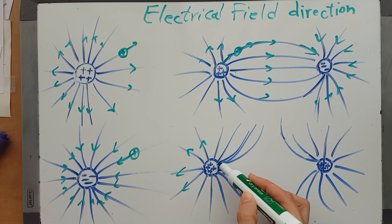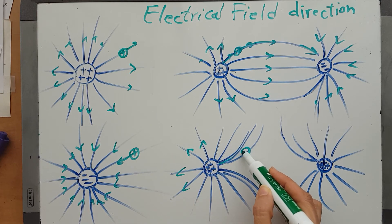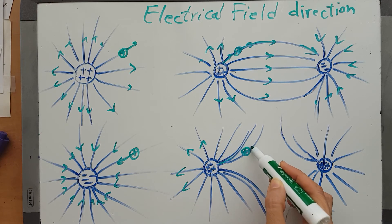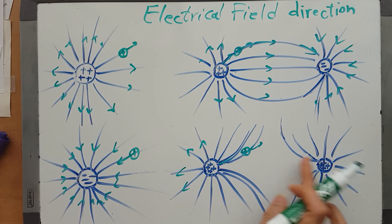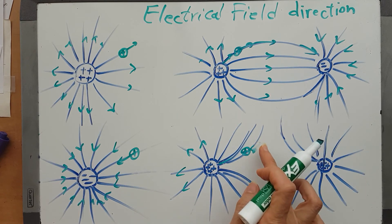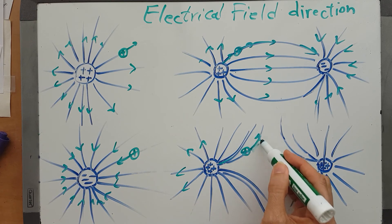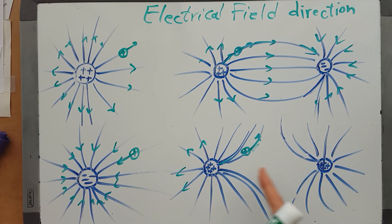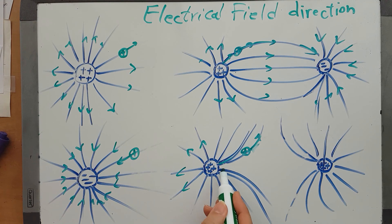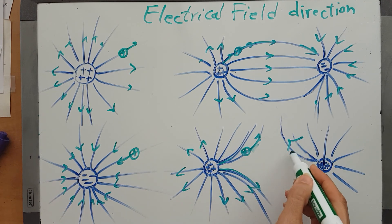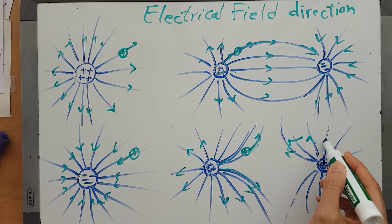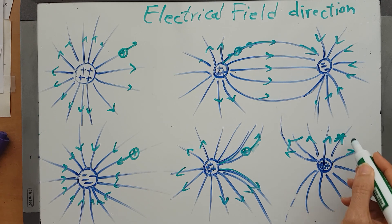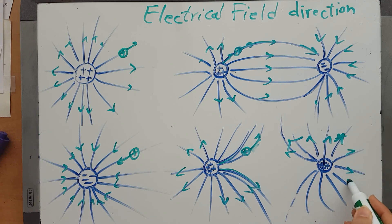Here, the positive source says 'go away' to the positive test charge, but the negative charge says 'don't come here,' so it goes upward. One charge wants to repel it and the other doesn't let it come near, so the field lines curve like this — and this is why they look the way they do.